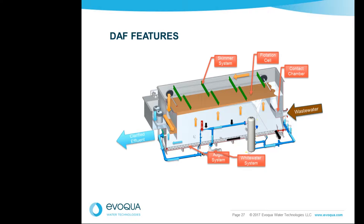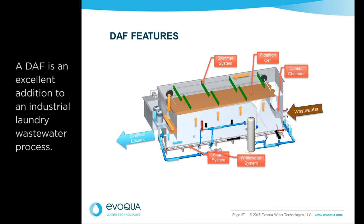DAF systems come in a variety of shapes and sizes — they can be circular or rectangular, and shallow or deep. Some systems have plate packs, some do not. Regardless, they all possess the same basic features. First, there is a contact chamber, which is where the influent comes in with the contaminant particles and makes contact with the fine air bubbles being introduced. That is where the majority of attachment takes place between the particle and the air bubble.